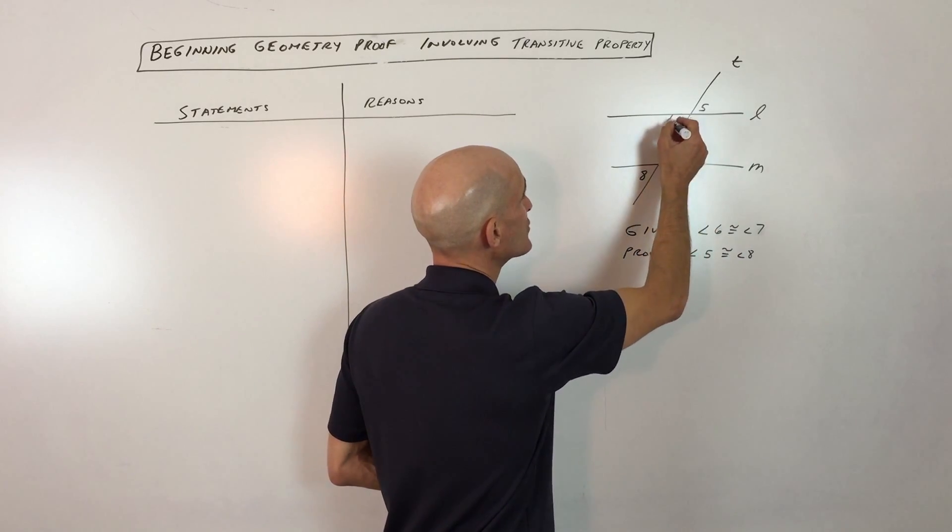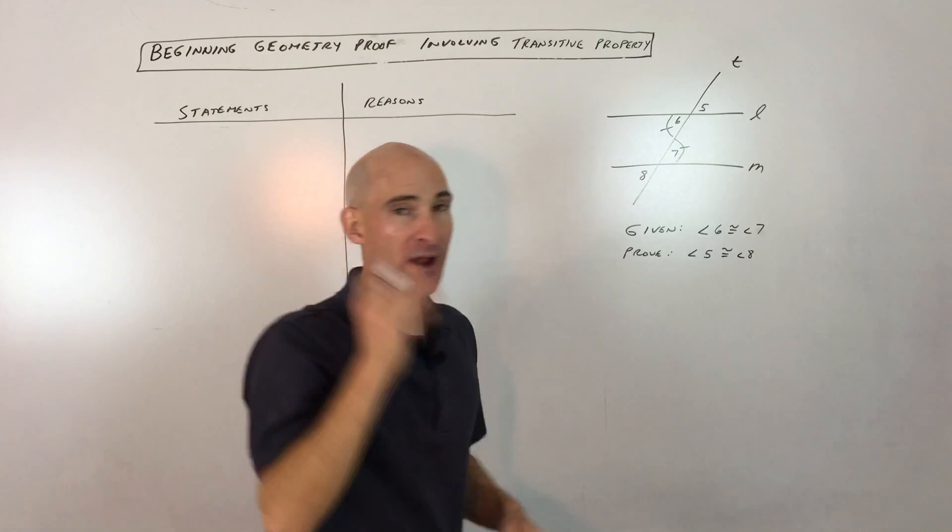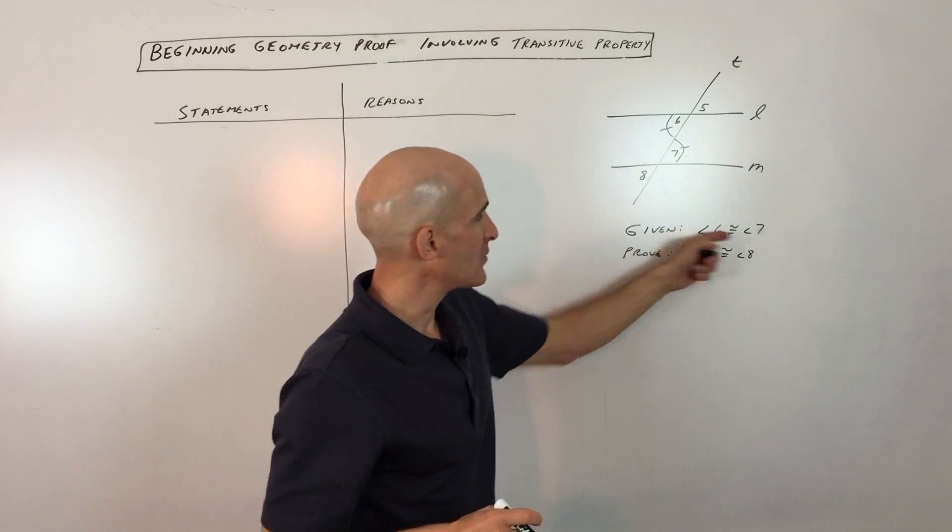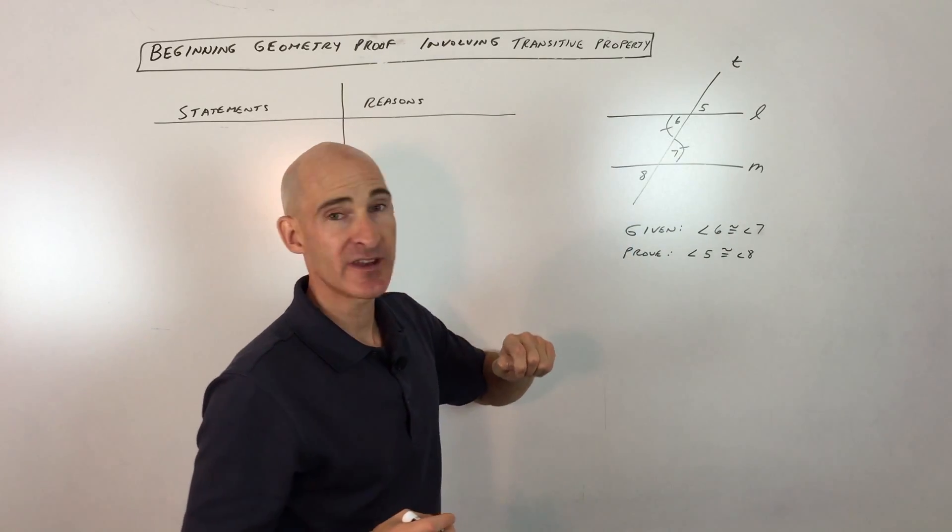So angle 6 is congruent to angle 7, so I'm going to actually mark these with the same marking so that when I see it, visually I can just know right away that they're equal without having to read it or remember it in my mind. So that's a good suggestion is to mark the diagram.